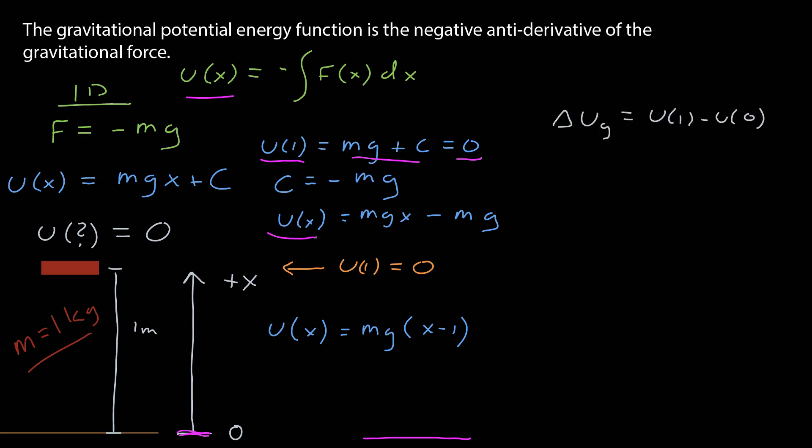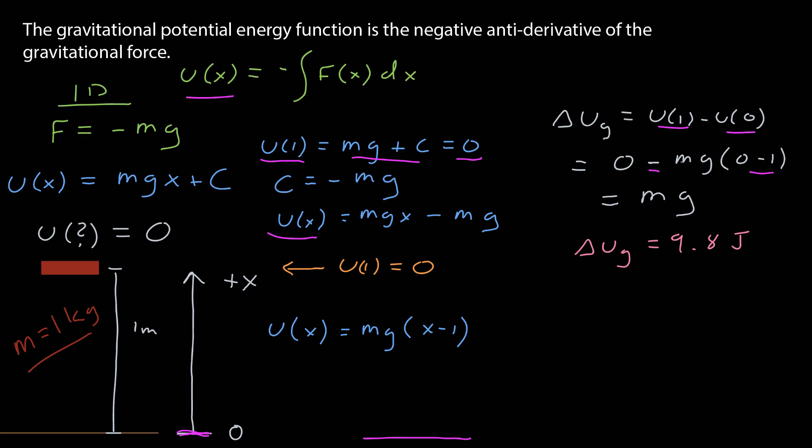Let's calculate that energy difference again — raising the book from the ground one meter. That's the function evaluated at one minus the function evaluated at zero. Putting in x equals one gives zero, and the function at zero is mg times (0 minus 1), so the two minuses cancel to give positive mg. With mass equal to one kilogram, that's 9.8 joules. The potential energy difference is the same regardless of where we choose the zero of potential energy. So the gravitational potential energy function is the anti-derivative of the gravitational force, with an integration constant determined by where we choose the zero of gravitational potential energy.